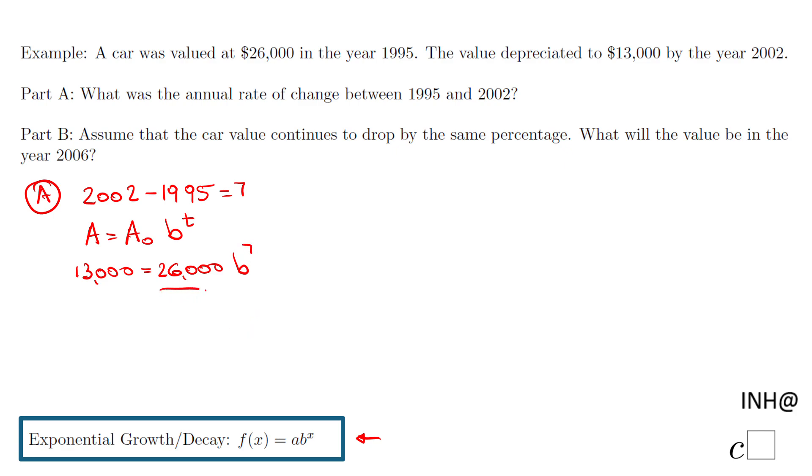So what should we do here to find b? First of all we want to solve for b to the seventh power. So that's the reason I'm going to divide by 26,000 on the other side. And what do we have here? These zeros can be cancelled out. 13 over 26, that is simply 0.5 or one half equals b to the seven.